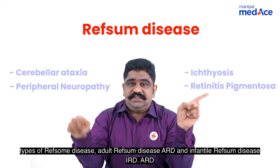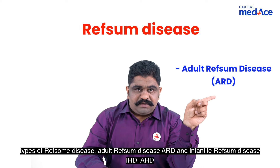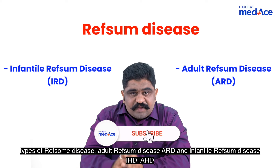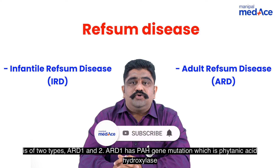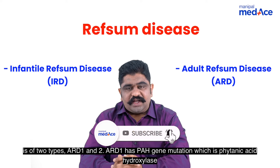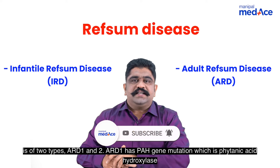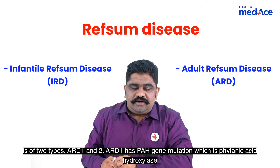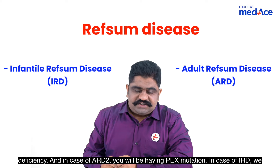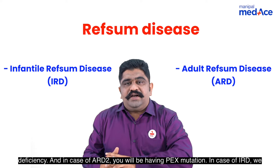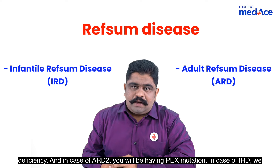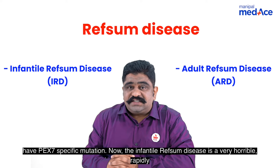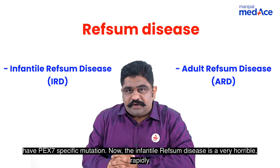There are two types of Refsum disease: adult Refsum disease (ARD) and infantile Refsum disease (IRD). ARD is of two types — ARD1 and ARD2. ARD1 has a PAH gene mutation, which is phytanic acid hydroxylase deficiency. In case of ARD2, there is a PEX mutation. In case of IRD, there is a PEX7-specific mutation.